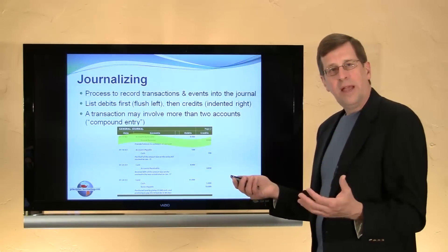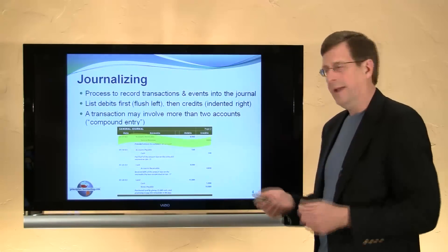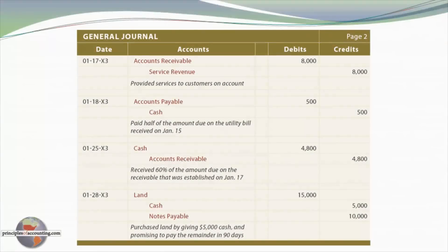Revenues are increased with a credit, hence the credit to service revenue. On the 18th of January, we paid half of a bill that we previously received, so accounts payable is being reduced. Accounts payable is a liability going down with a debit. Cash is also going down as we disperse the money — we credit the asset to reflect the decrease.